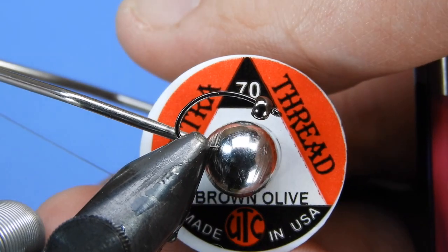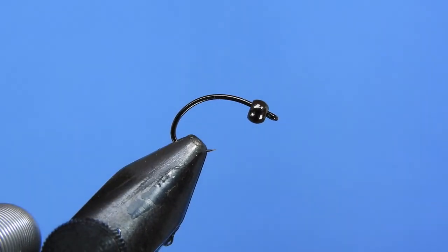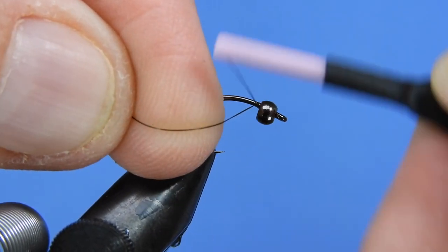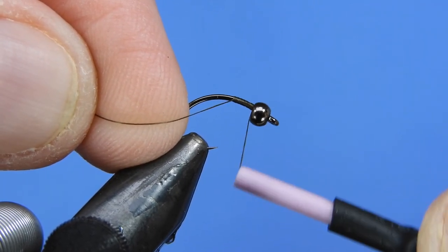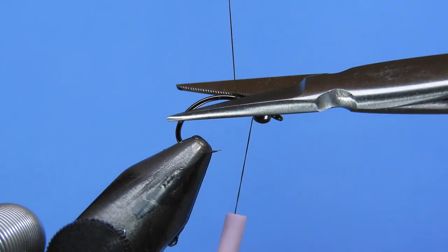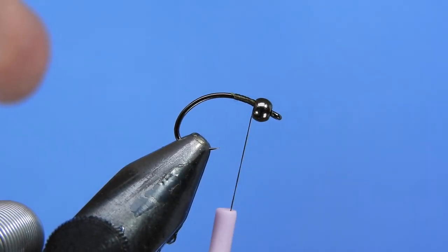For thread, I'm going to be using something dark. In this case, I'm going to be using a brown olive UTC 70D and we'll just start by putting a little bit of thread on just to get it established just behind the bead.